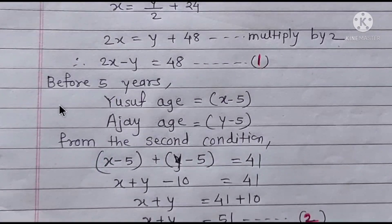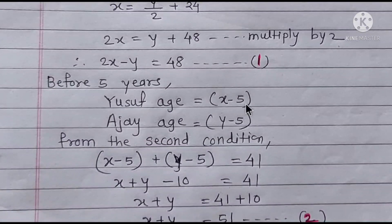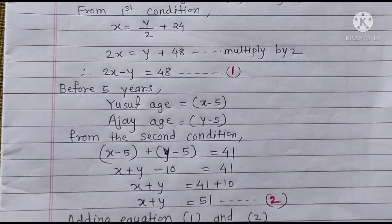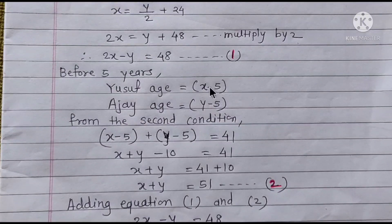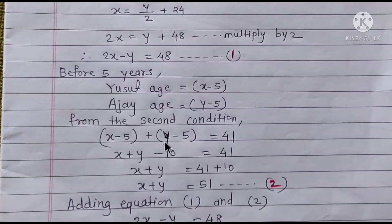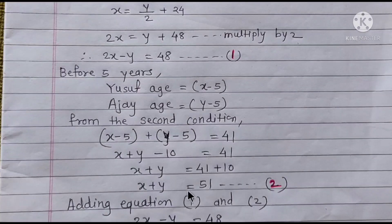From the second condition — 5 years before, Yusuf's age was X minus 5 and Ajay's age was Y minus 5. So X minus 5 plus Y minus 5 is equal to 41. Simplifying: X plus Y minus 10 equals 41, therefore X plus Y is equal to 51. This is Equation 2.